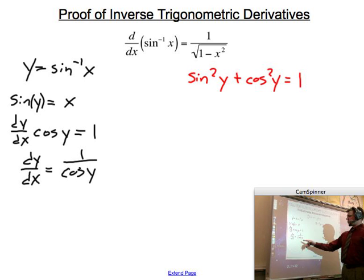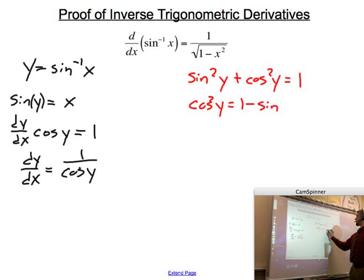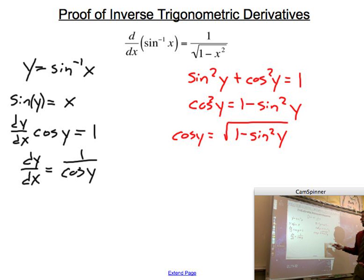And we want to be working with cosine of y, so in order to do that, we're going to subtract. So you have cosine squared of y equals one minus sine squared of y. And I don't want to have cosine squared, as you see in the bottom of our original dy dx fraction. And so I can do the square root of both sides. So I have cosine of y equals the square root of one minus sine squared of y. That's a lot nicer, because now I have cosine of y. I could plug that in there. But I'm going to do one more step, because I started this thing in terms of x, and I want to finish it in terms of x as well.